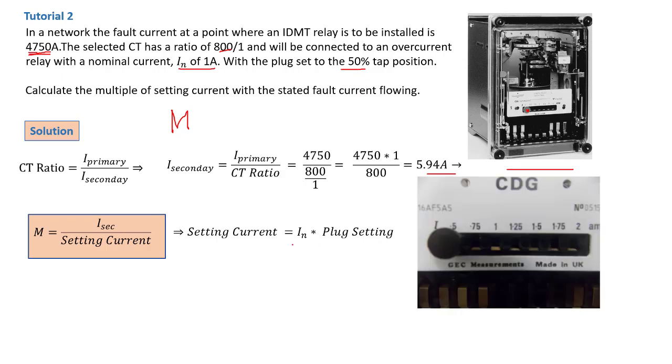In the previous tutorial, I explained the importance of your setting current as the function of the nominal current times the plug setting. As you can see right now here, the plug settings are set at 0.5, so that is now our setting current. Since we know the nominal current is 1 amp and the plug settings are set at 50%, that's basically 0.5.